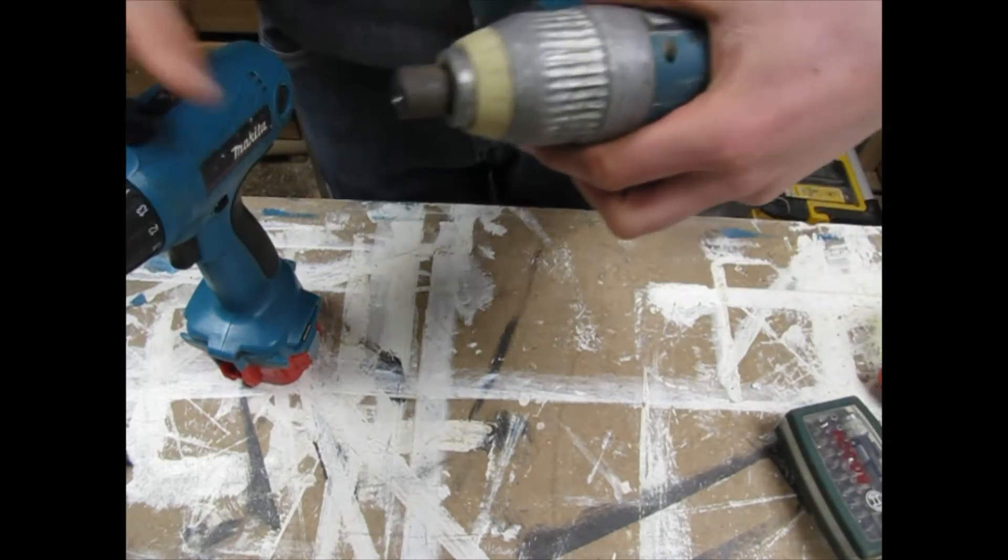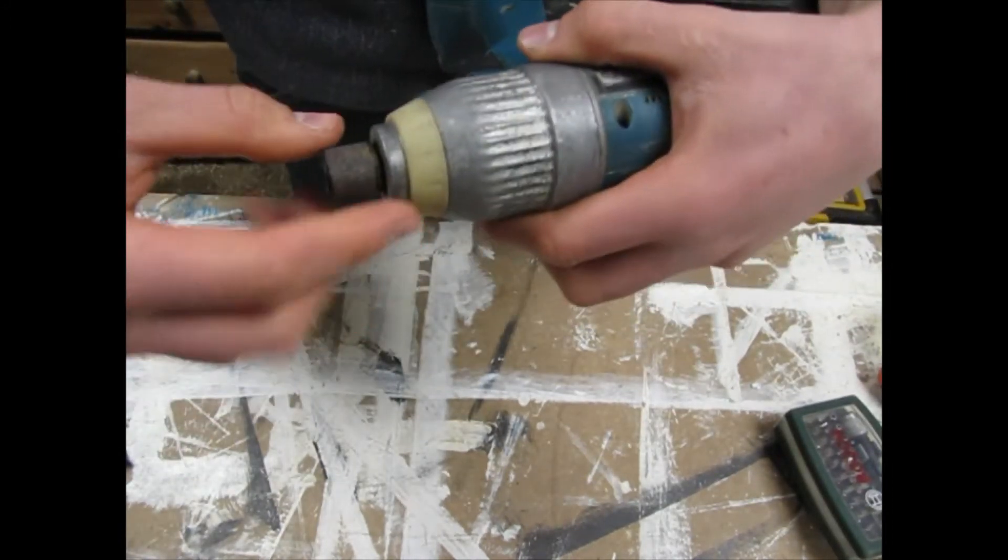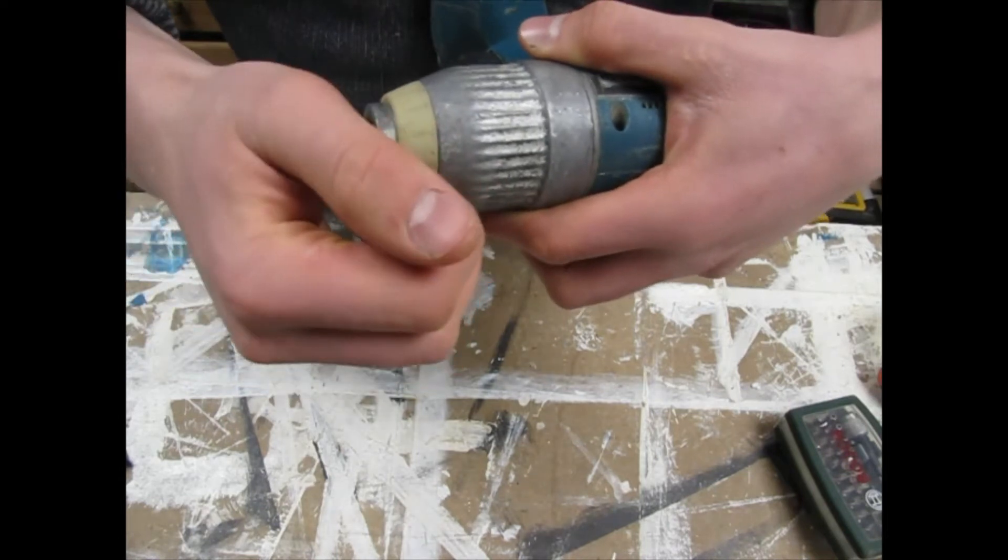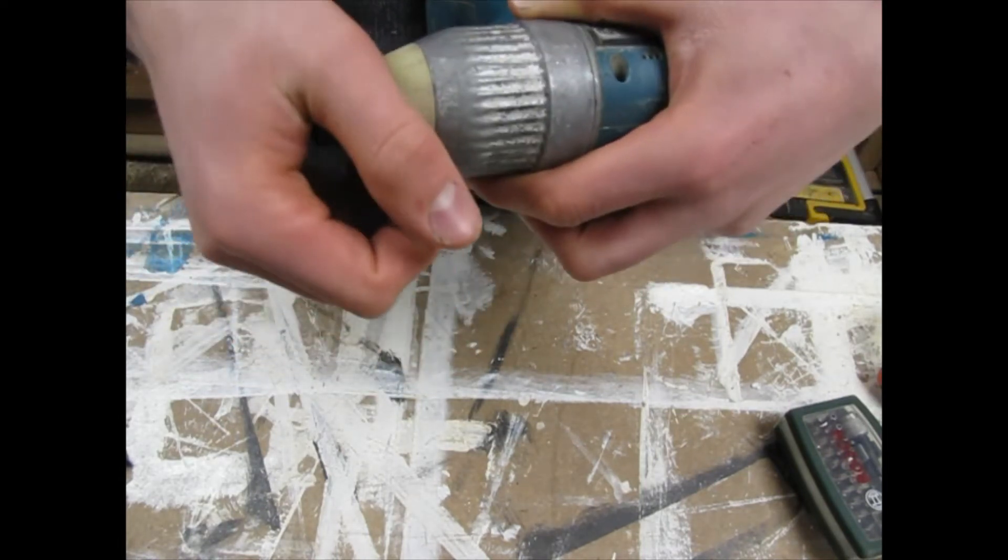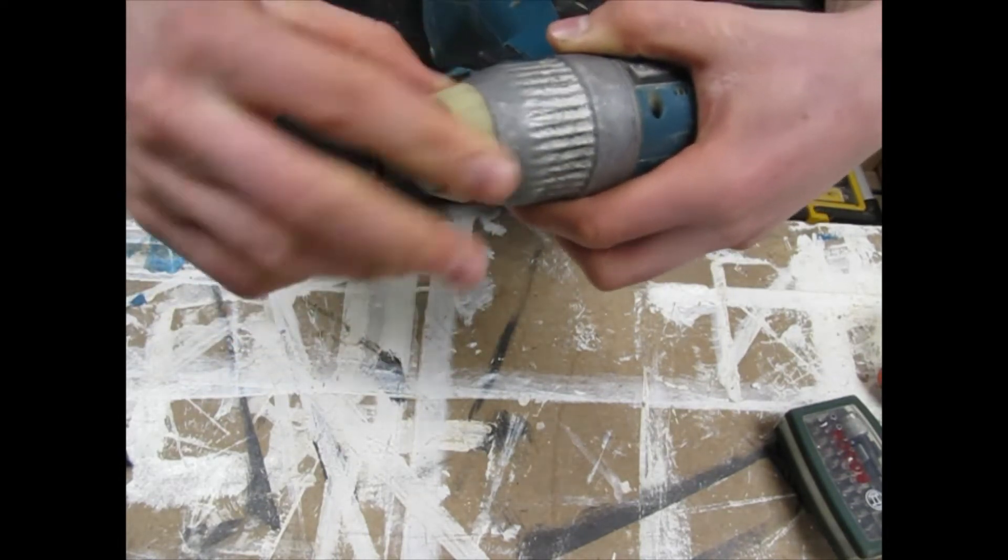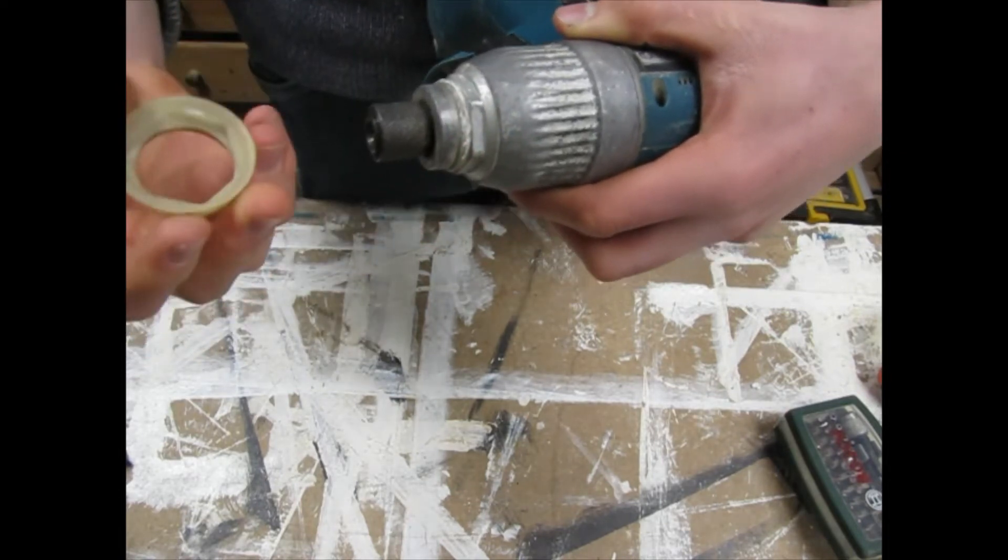Then you have to carefully peel this off. This is the glow in the dark ring. It comes off fairly easily.